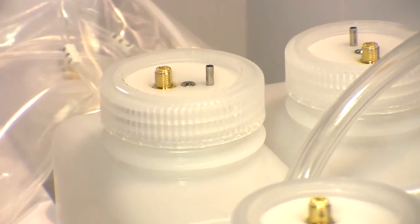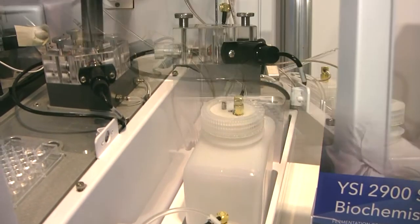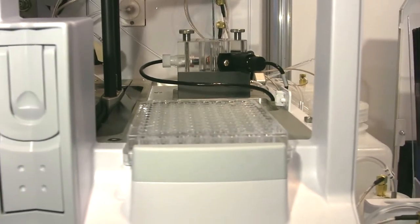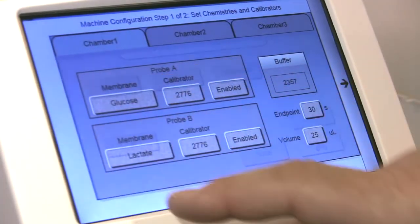Used predominantly in the bioprocess, clinical chemistry, biofuel, and food and beverage industries, the 2900 series is highly resistant to clogging and can handle the highest cell counts without pretreatment.